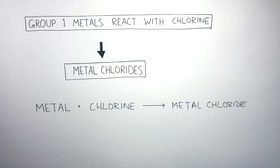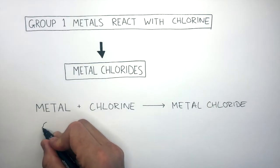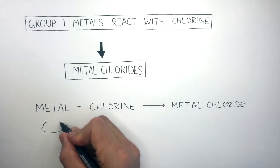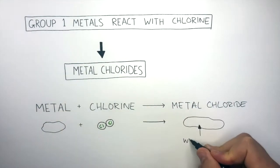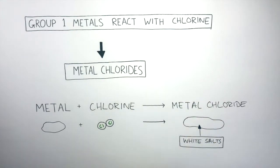Generally, for all alkali metals, the atoms in this shiny alkali metal react with a chlorine molecule to form a white salt, and that white salt is the metal chloride.